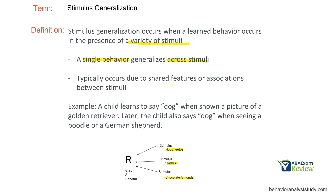This typically occurs due to shared features or associations. Cheetos, Skittles, and chocolate almonds don't share many features, but they fit in the same category of being food — they belong to the same stimulus class. Another example: a child learns to say 'dog' when shown a picture of a golden retriever, and now says 'dog' when seeing a poodle or German Shepherd. The poodle, German Shepherd, and picture are all stimuli, and the response is generalizing across all of them.